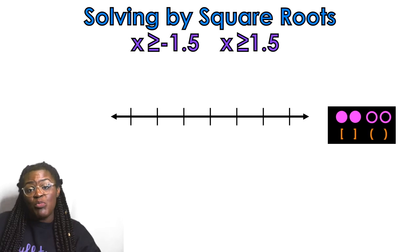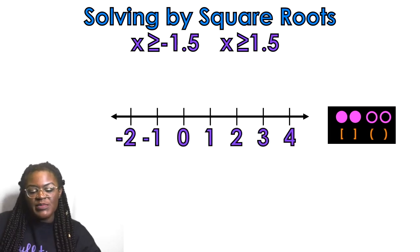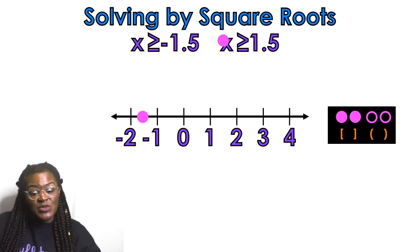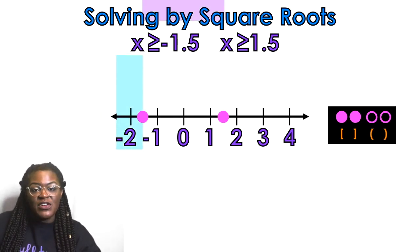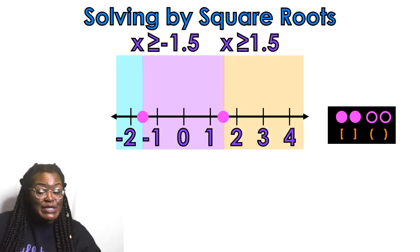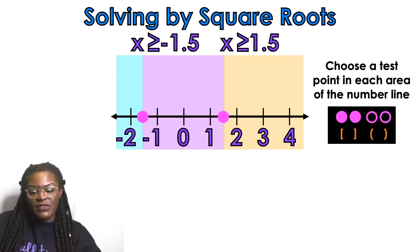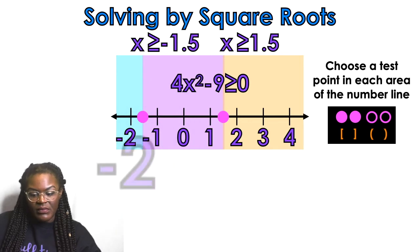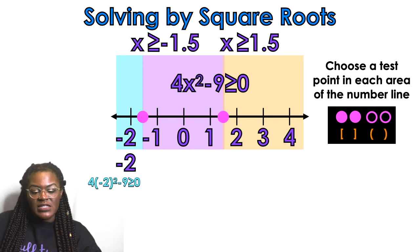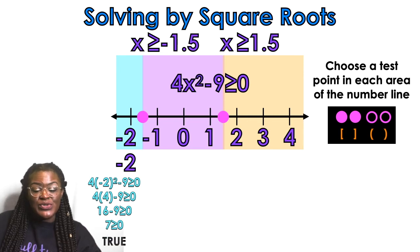What kind of circle should I use — open or closed? Closed! Good job. Here's my number line. I'm going to place negative 1.5 in between negative 1 and negative 2, and positive 1.5 in between positive 1 and positive 2. I'll show different areas of the graph: the blue area, the purple area, and the orange area. I'm going to pick a point from each area. From the blue area, I'll pick negative 2 and plug it into the inequality. I get 7 is greater than 0 — that is true, so the blue area is going to be part of my solution.